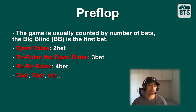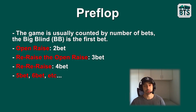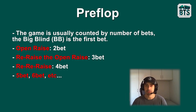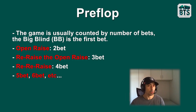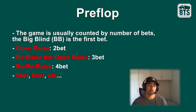We're gonna start with the preflop game, which is usually very simple, but still people make a lot of mistakes. Preflop is counted by number of bets. The big blind is always the first bet. The first open raise — whether it's a raise for a steal or isolation from a limper — is counted as the two-bet or second bet. The re-raise to that is called a three-bet, and the re-raise to that is called a four-bet. So to simplify: open raise, then three-bet, four-bet, five-bet, six-bet, etc.